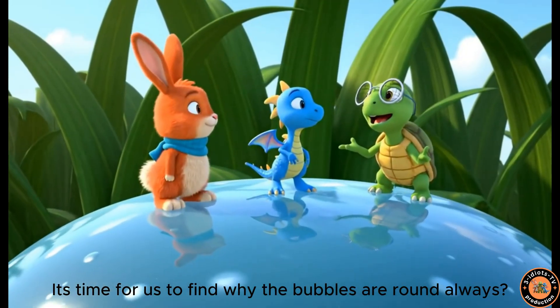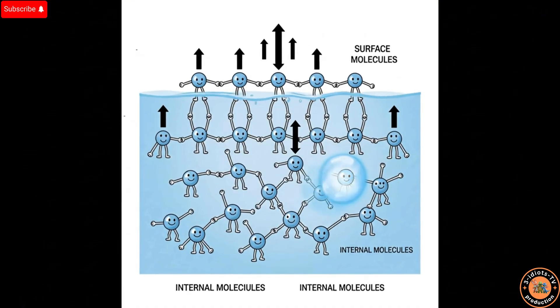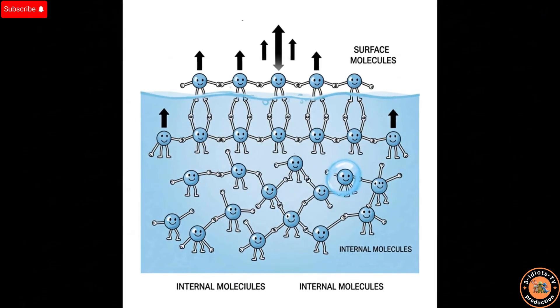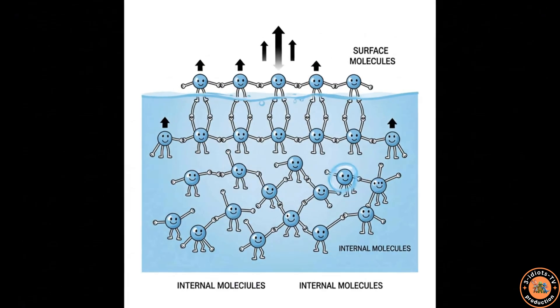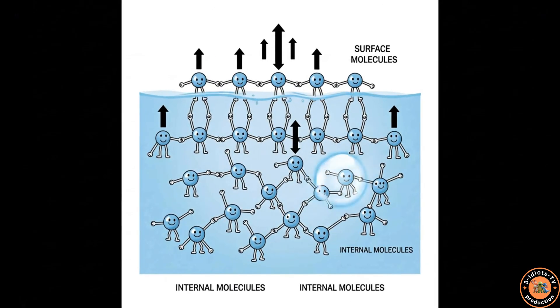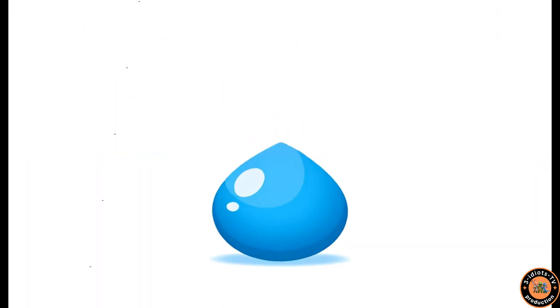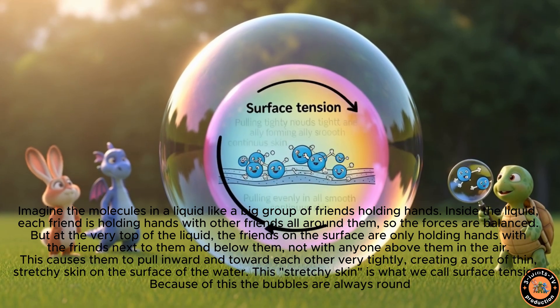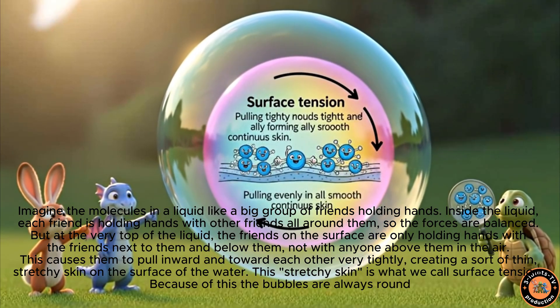It's time for us to find why the bubbles are always round! Imagine the molecules in a liquid, like a big group of friends holding hands. Inside the liquid, each friend is holding hands with other friends all around them, so the forces are balanced. But at the very top of the liquid, the friends on the surface are only holding hands with the friends next to them and below them, not with anyone above them in the air. This causes them to pull inward and toward each other very tightly, creating a sort of thin, stretchy skin on the surface of the water. This stretchy skin is what we call surface tension. Because of this, the bubbles or liquid droplets are always round.